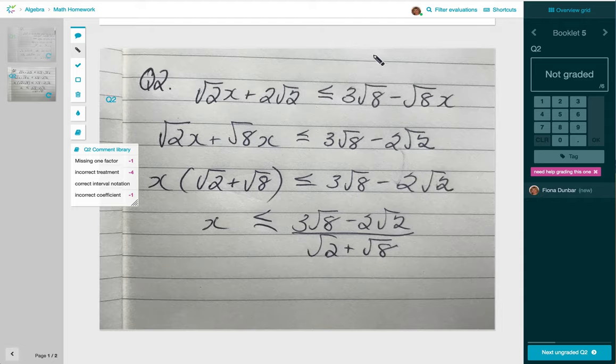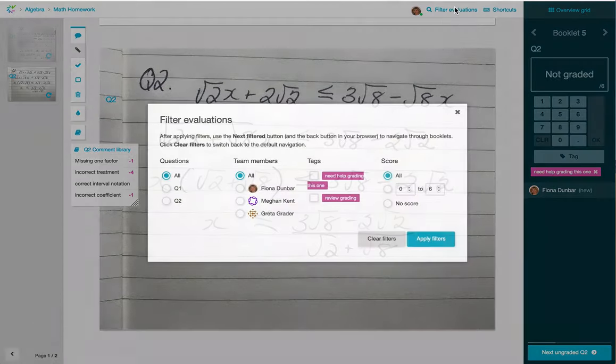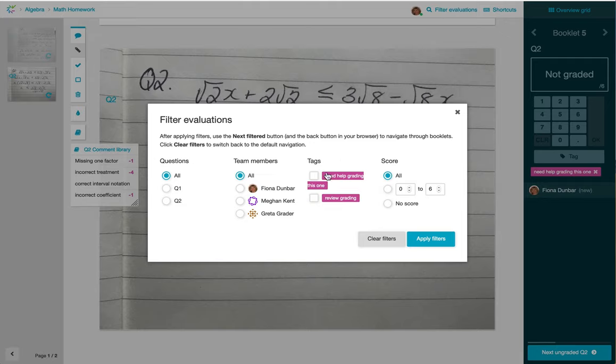A facilitator could go in and click on Filter Evaluations, and it would allow them to filter along some of these tags.